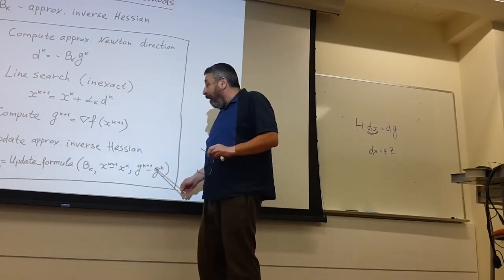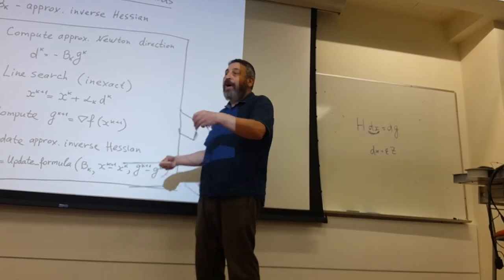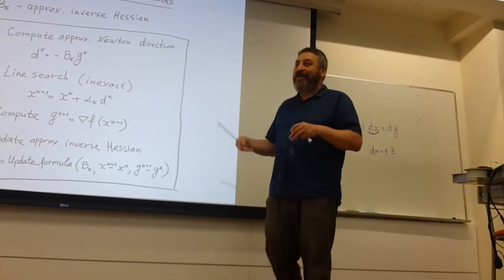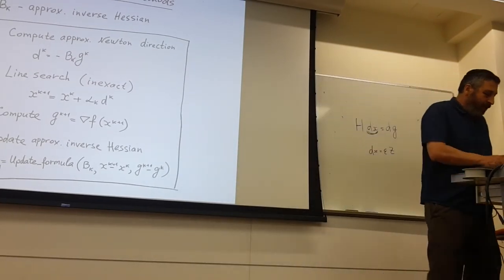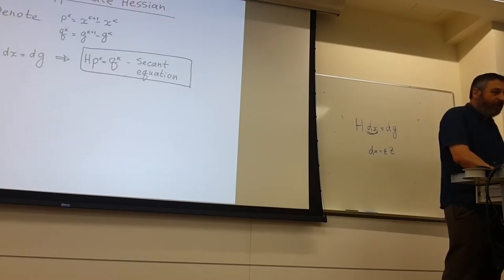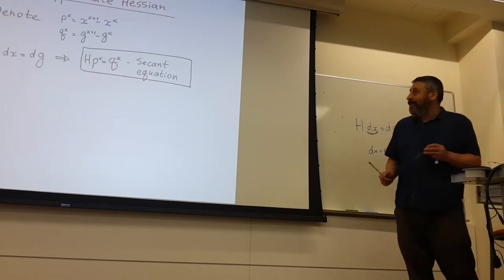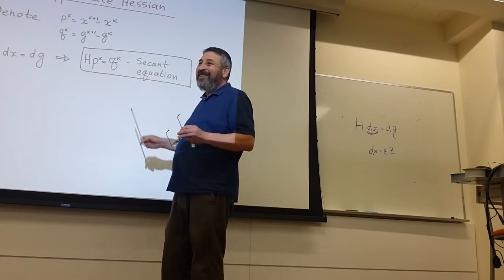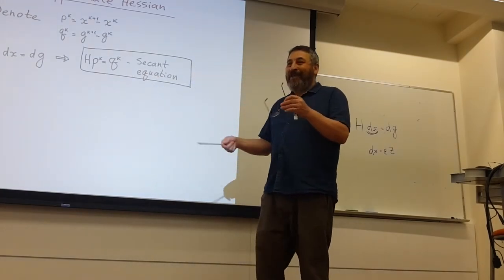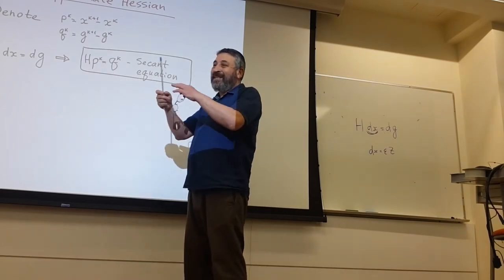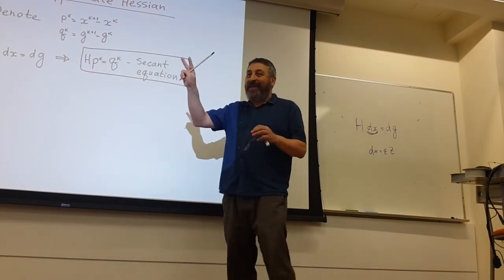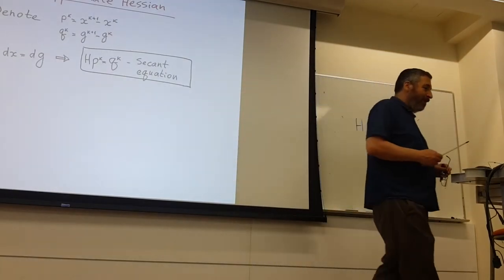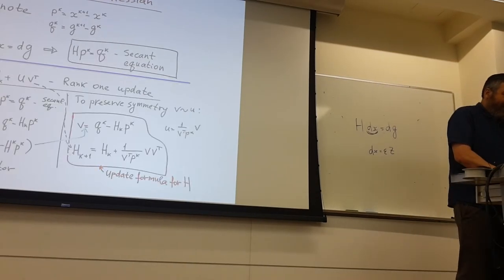And then we will update, compute more accurate approximation of inversion based on new information with new gradients and new displacements, and this allows us to be even more accurate. The basic equation is the same, H multiplied by dx is dg. We want our approximation of Hessian satisfy this equation for all pairs of delta x and delta g which we had on the way of our algorithm.